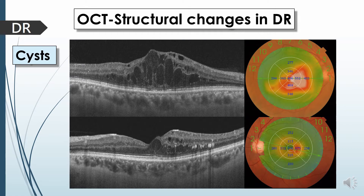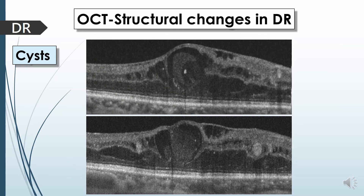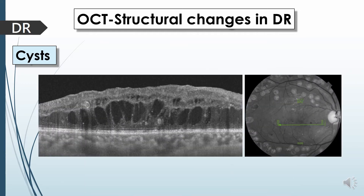Cysts appear as multiple low-reflective spaces of variable sizes and shapes with thin stretched walls, located at the outer nuclear layer and very rarely in the inner and ganglion cell layer. The cavity of these cysts is usually optically empty or clear; however, in some cases it may harbor moderate reflective or hyperreflective material representing exudation. Their walls are thin and stretched, representing the stretched fibers of Henle's layer, Müller fibers, and bipolar cells.